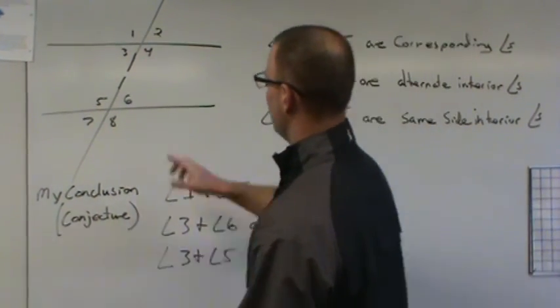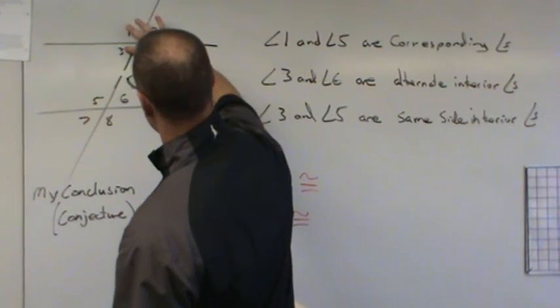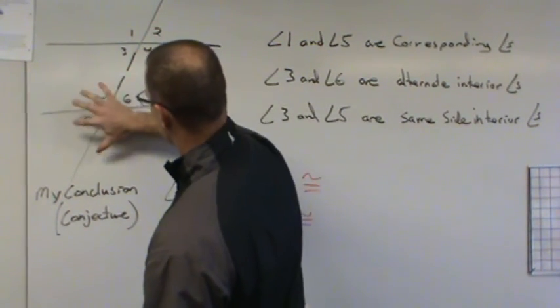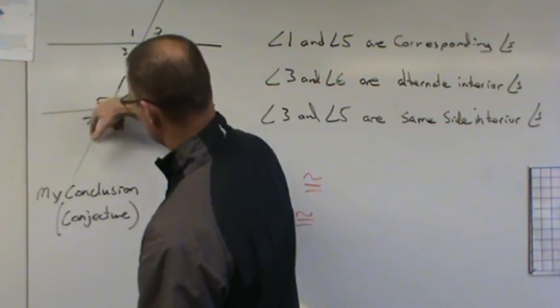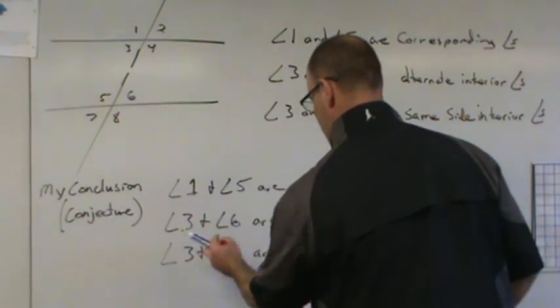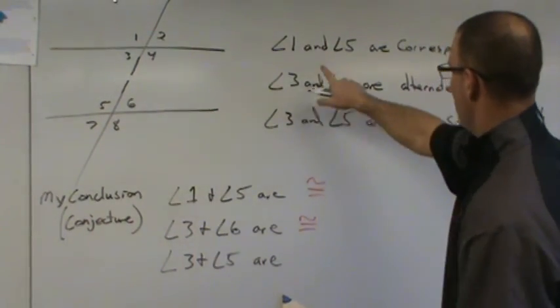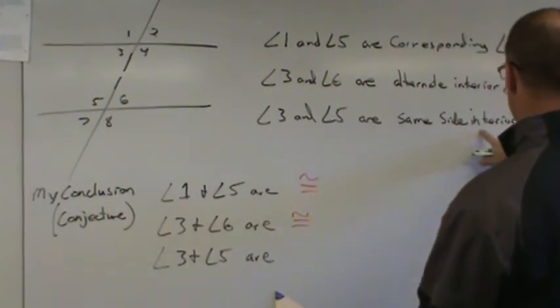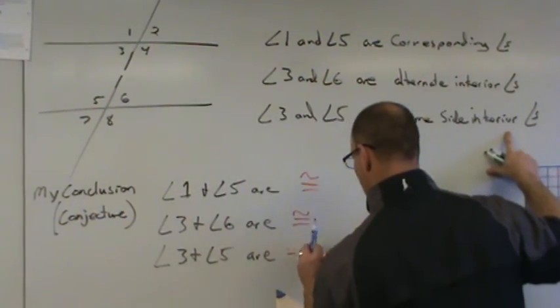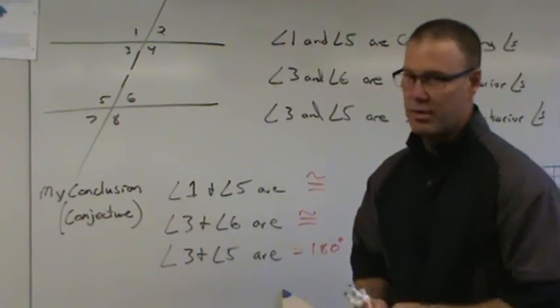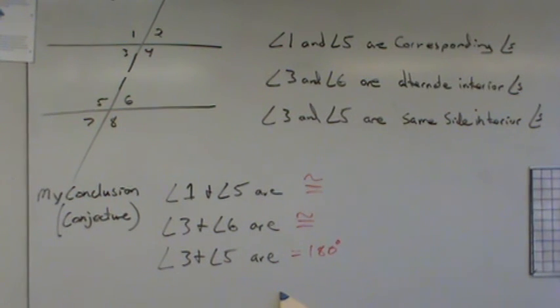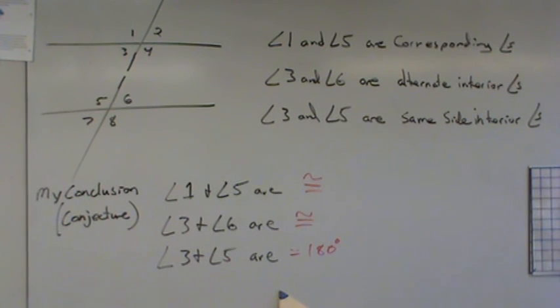And then lastly, it has same side interior. Think about it. If I move three or this group of angles down here or up here, three would go to seven. Well, five plus three equals 180 degrees. So angle three and five, which are same side interior, they equal 180 degrees. All right. So there's our notes for today. That's short and sweet. Ask questions if you need to. Make sure you have your notes done. This is going to be an assignment.